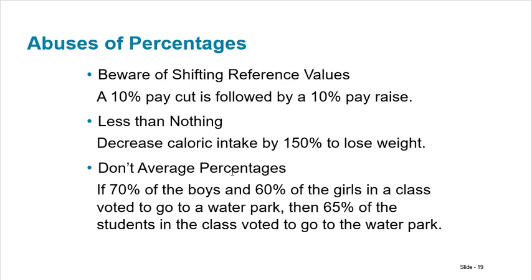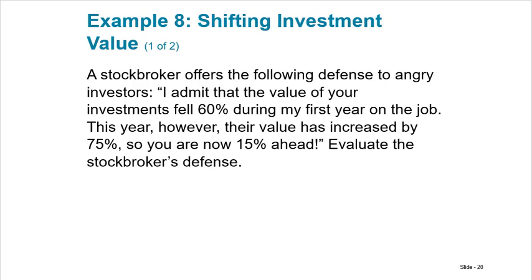Don't average averages. If 70% of the boys and 60% of the girls in a class voted to go to the water park, saying 65% of the students voted — averaging those two numbers — is totally wrong. That would only be correct if the number of boys and girls were exactly the same. Otherwise you have to take a weighted average. Don't ever simply average percentages.